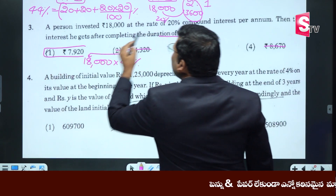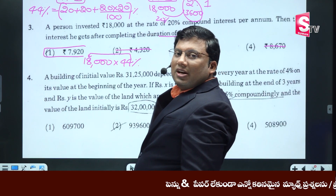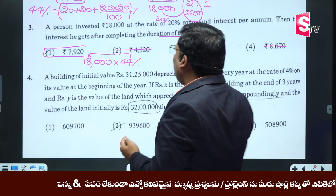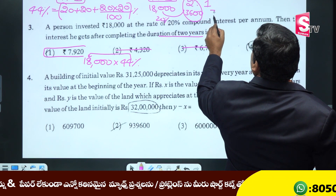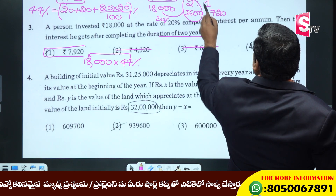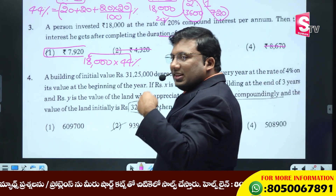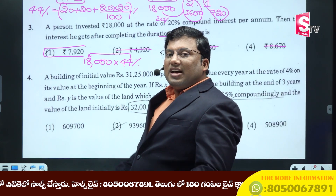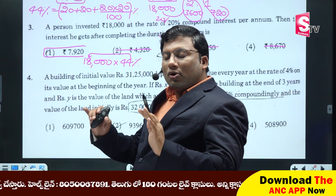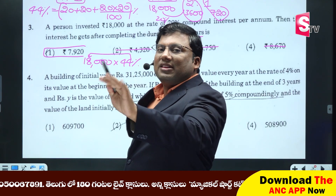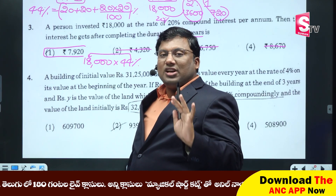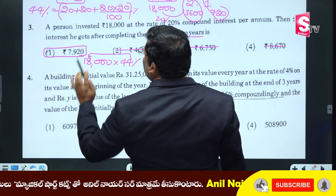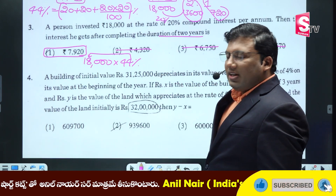20% of 3,600 is 720. If you are doing a classic paper with the right formula in the right book using a correct teacher, you will be smart. The answer is 7,920.